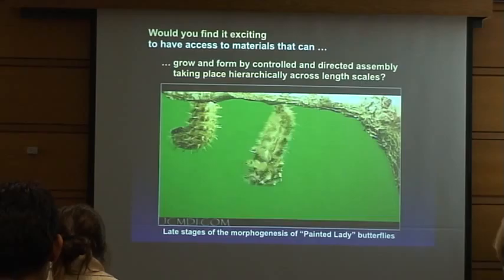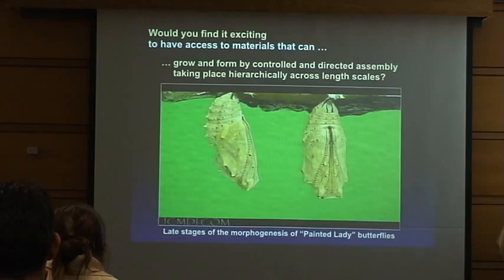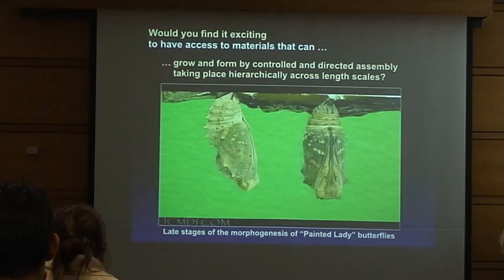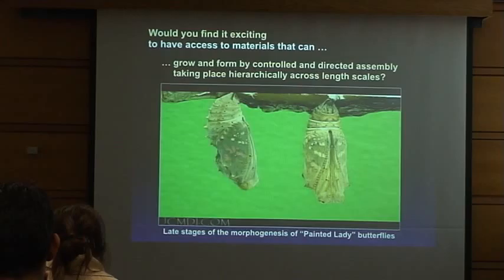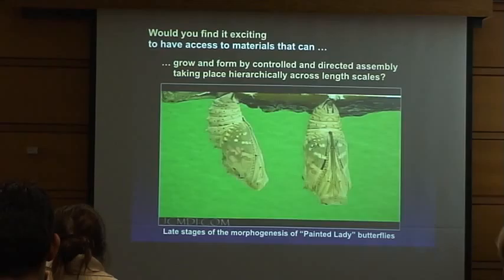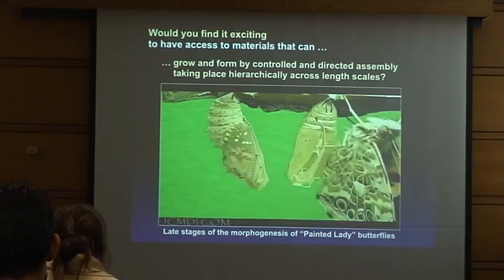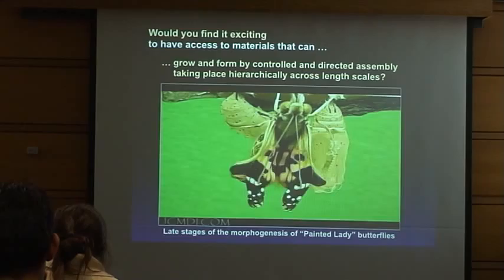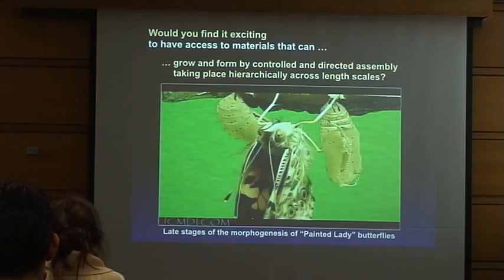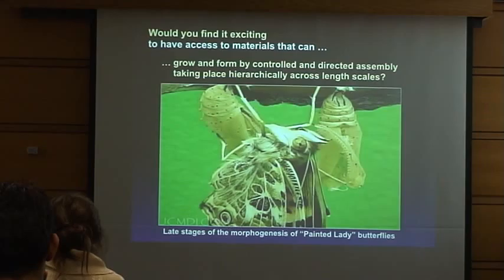The second exciting example: materials that can grow and form shapes with purposeful structure, like the crystals found in the painted lady butterfly. It's a very common butterfly — you can find them around here. It's interesting because it has scales that give it color, and scales that are more transparent, with elements on those scales that have interesting photonic properties. It would be appealing to make something like this synthetically.